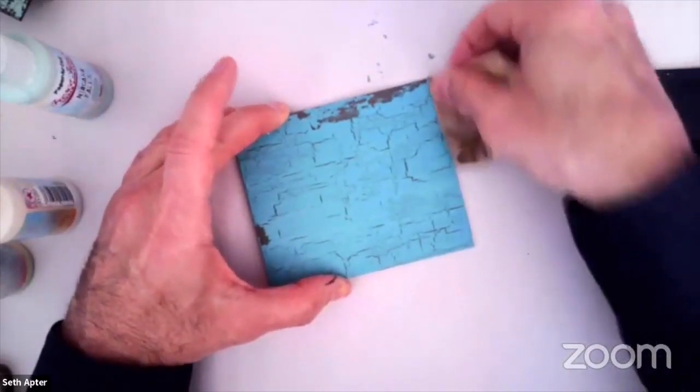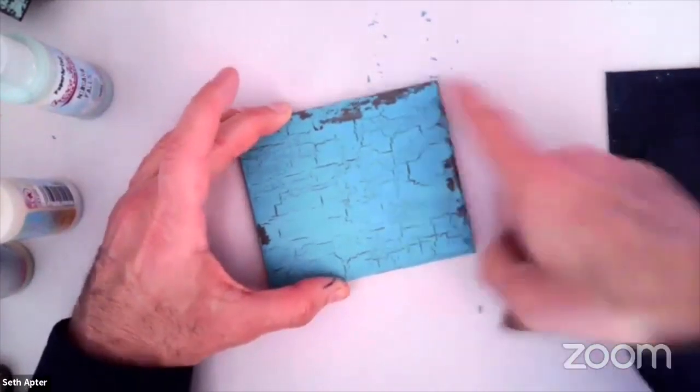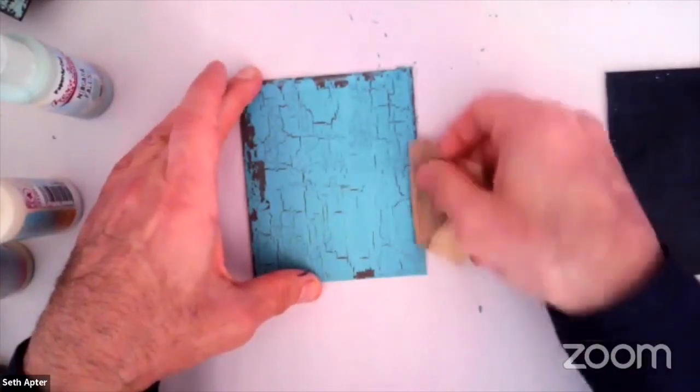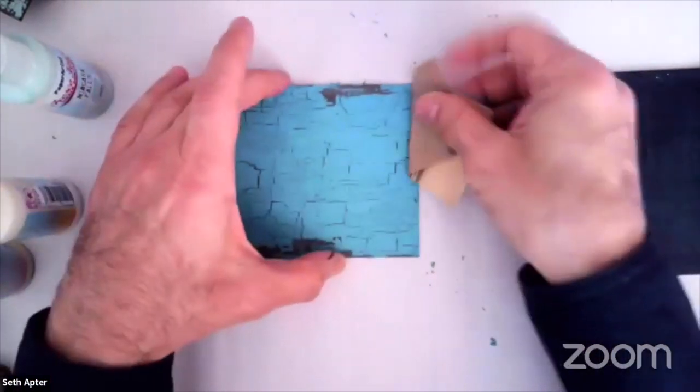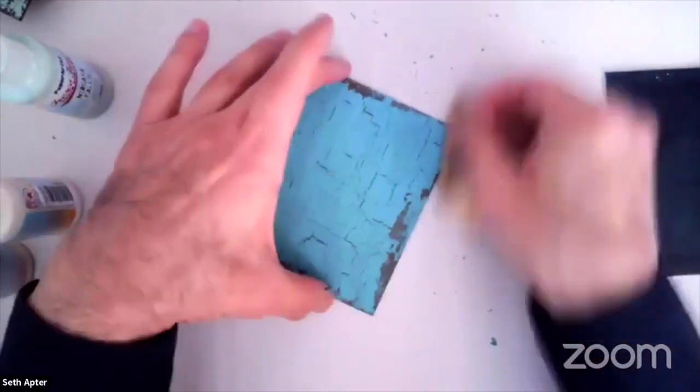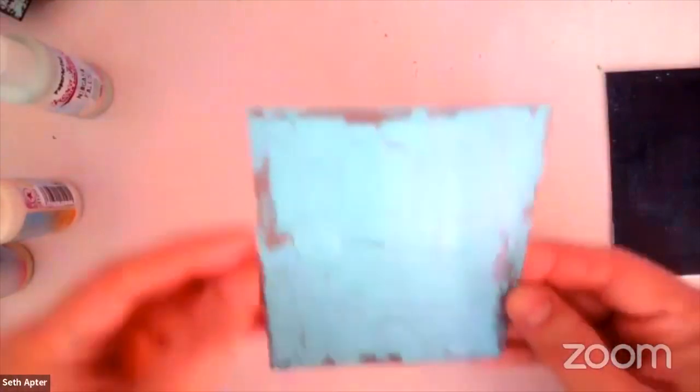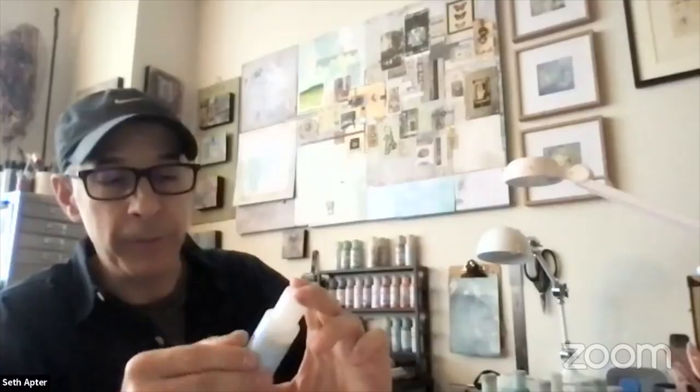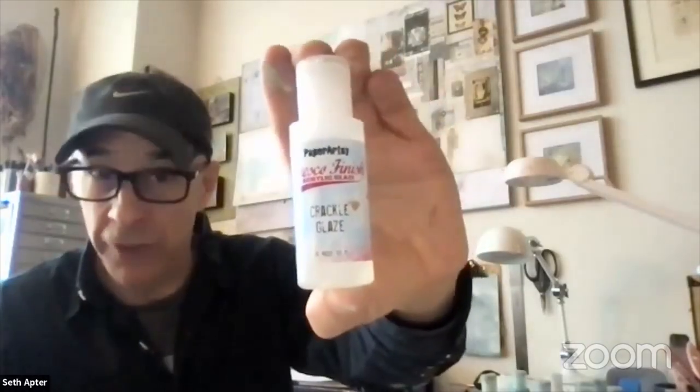Now, you got to know you have barely any control when you do it this way. So somebody out there is probably freaking out because I'm quote unquote ruining the crackle. I'm really trying to stay mostly at the edge. But you know, with the sandpaper, you might have even less control than the sanding block. But you do that. And you can pull out even more grain. Paper Artsy crackle glaze. It's good stuff.